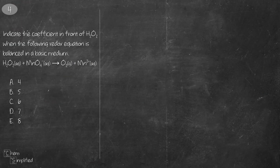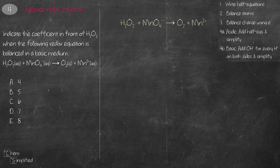The next question is a redox reaction requiring us to balance it in a basic medium. Before writing the half equations, we need to find the oxidation numbers. We know the oxidation numbers for oxygen and manganese off the bat, then calculate H as +1 and manganese as +7.